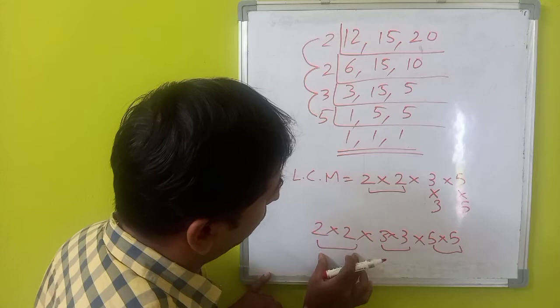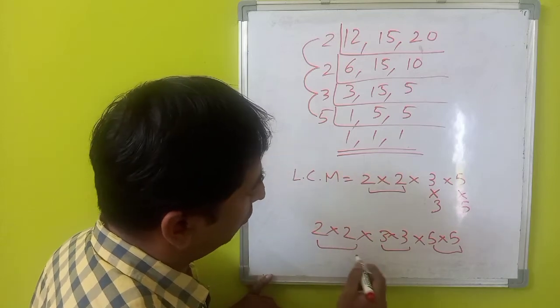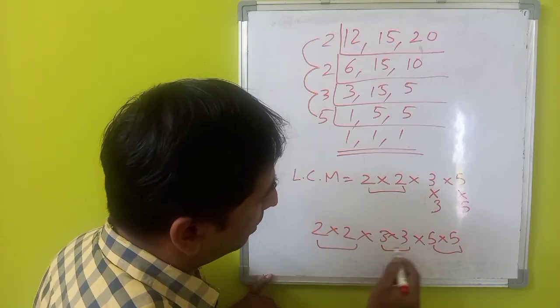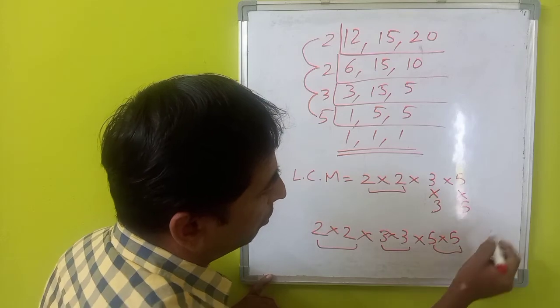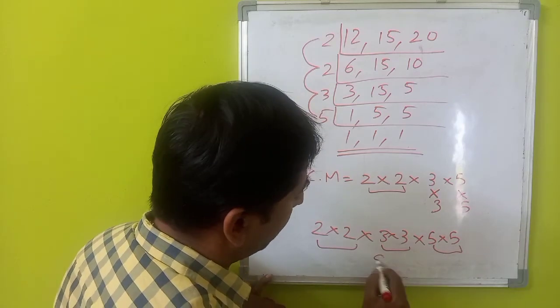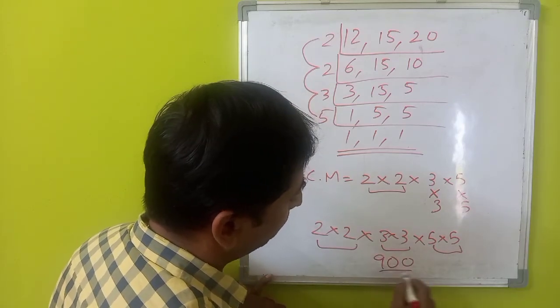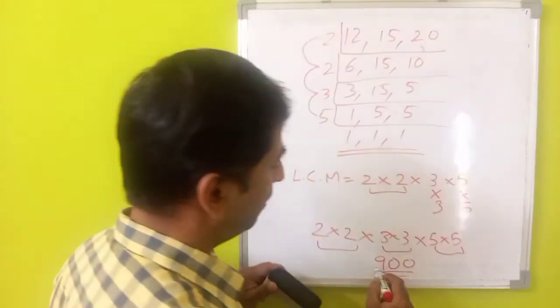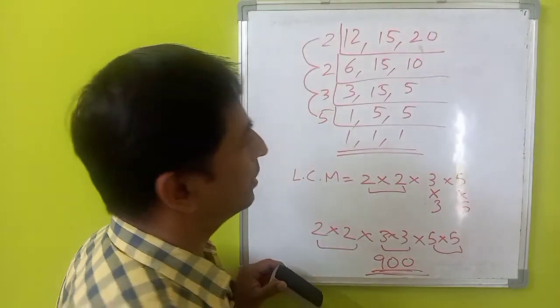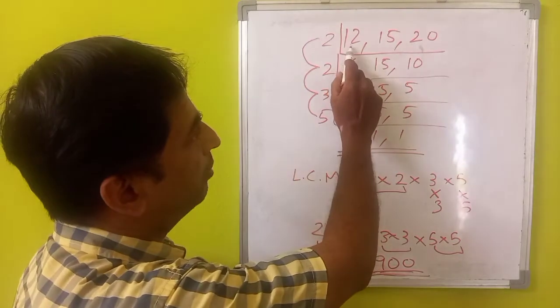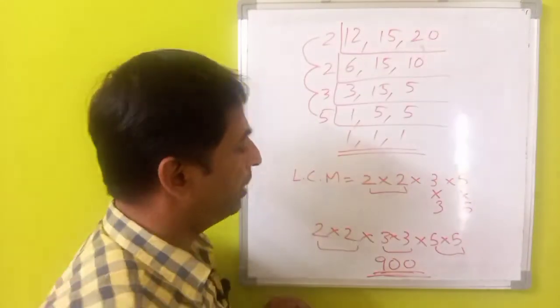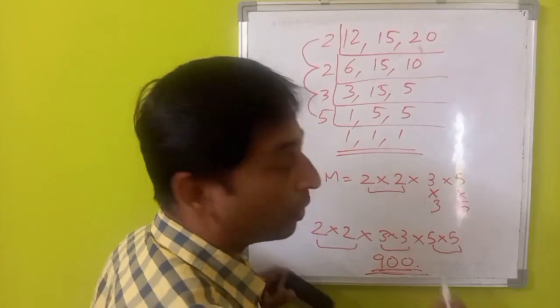So, let us take what is this number. So, let us take what is this number. 4 multiplied by 2 is 4 into 9 is 36 into 25. 36 into 25 will be 900. That means 900 is the smallest number which is perfectly divisible by 12 and 15 and 20 and is also a perfect square.